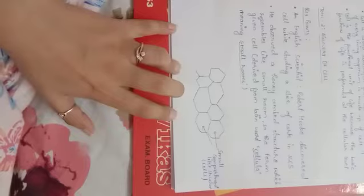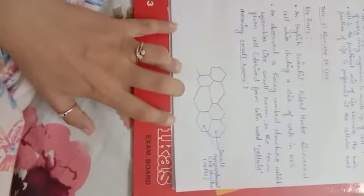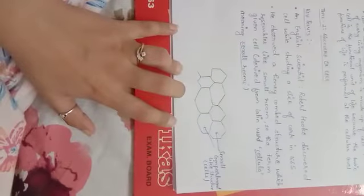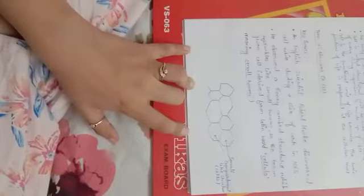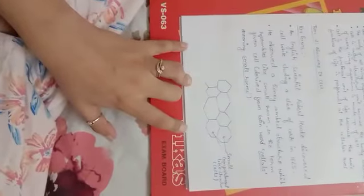Our next topic for today is the discovery of cells. We have discussed what a cell is and the definition of a cell. Now we are going to see how a cell was discovered. There was an English scientist named Robert Hooke.